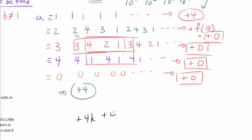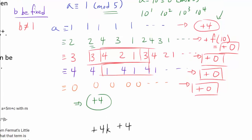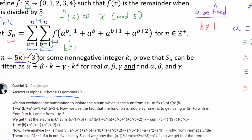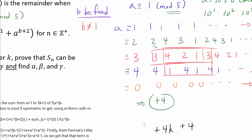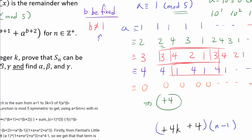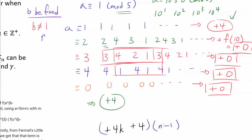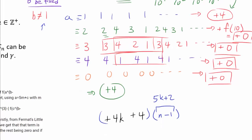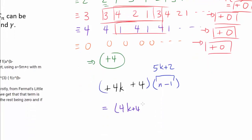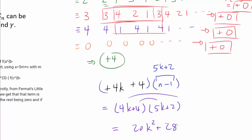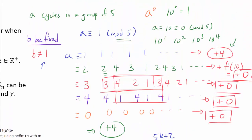So for each fixed b not equal to 1, we add 4k+4. Since b ranges from 1 to n and we exclude b=1, we multiply by n-1 = 5k+2. That gives (4k+4)(5k+2) = 20k² + 8k + 20k + 8 = 20k² + 28k + 8. That's our polynomial contribution so far.